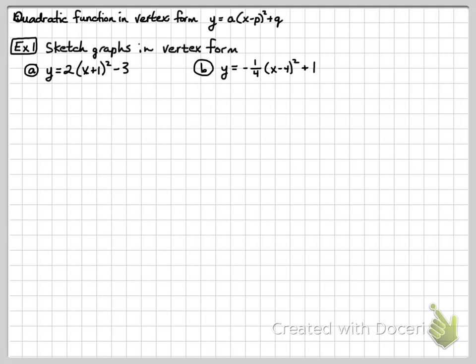When we look at quadratic functions in the vertex form of Y equals A times X minus P squared plus Q, we're going to sketch these graphs in vertex form. What you're going to do is generate some ordered pairs and see what's going on. In this one, we're going to look at, first of all...